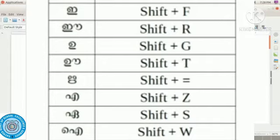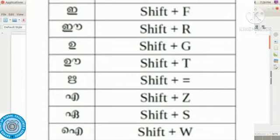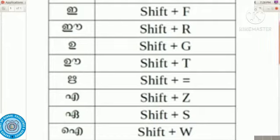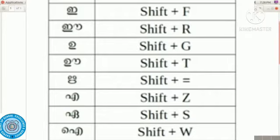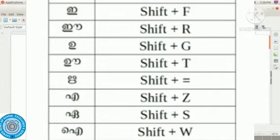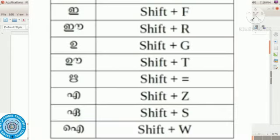The next letter is 'u'. To type 'u', press Shift key plus G. Shift key plus G gives us the letter 'u'. Next we have to type the letter 'ū'. For that, use Shift key and T key.